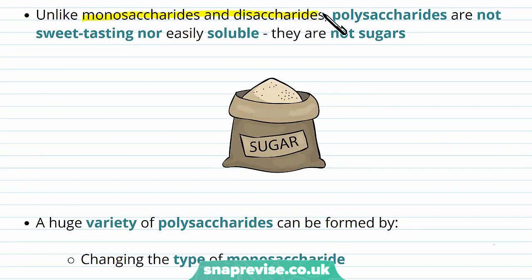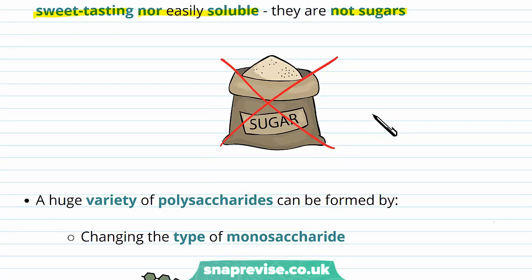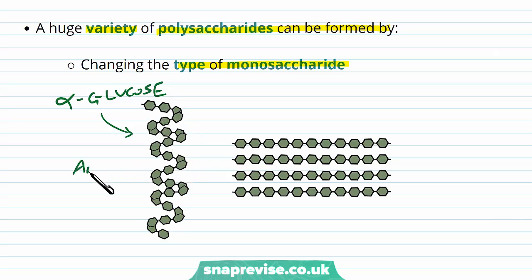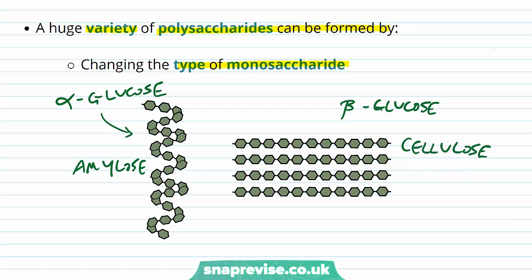Polysaccharides are different to monosaccharides and disaccharides because they're not sweet tasting and not very soluble — they don't dissolve well in solutions, so they're not what we call sugars. Polysaccharides come in much more variety because we can change the type of monosaccharide incorporated into a polymer. For example, if we use alpha glucose, we end up with amylose. If we incorporate beta glucose, the other isomer of glucose, we end up with a completely different polymer known as cellulose. Just by changing the monosaccharide by a tiny amount, the structure and properties of the polysaccharide are very different.